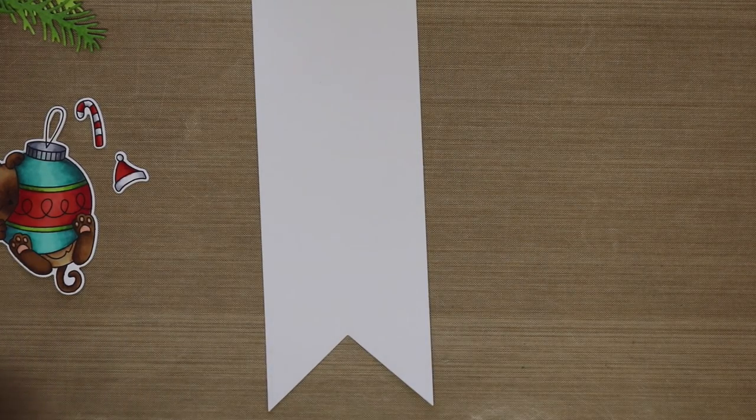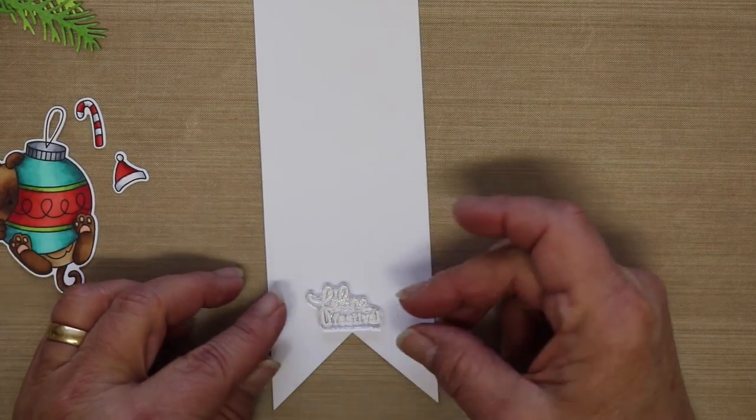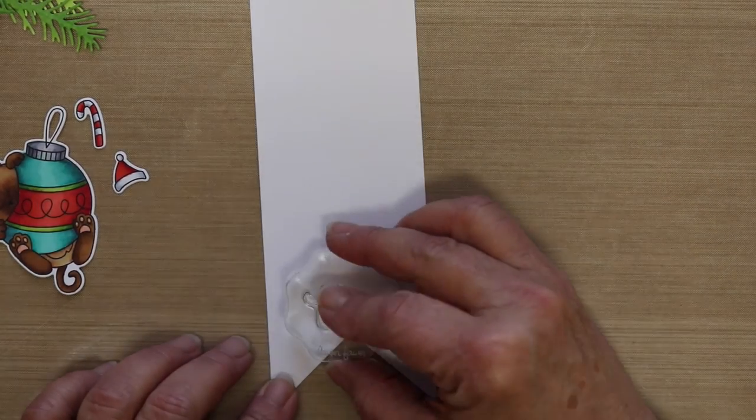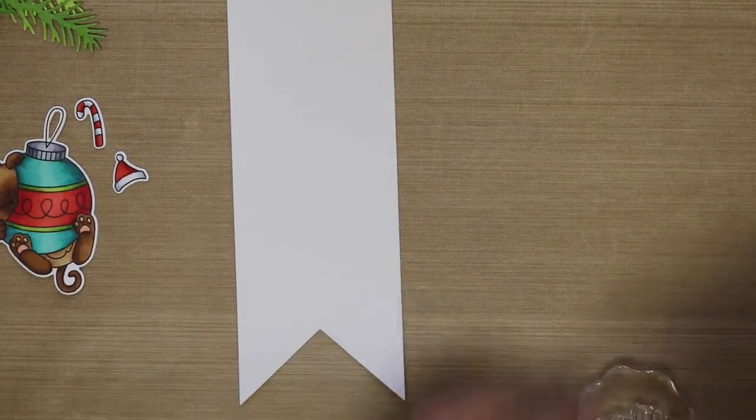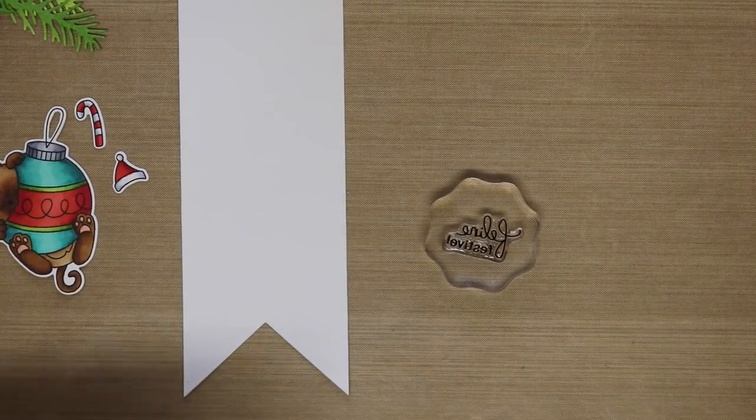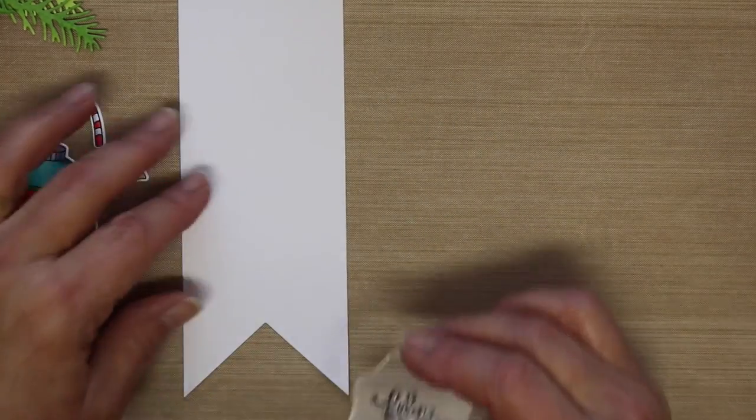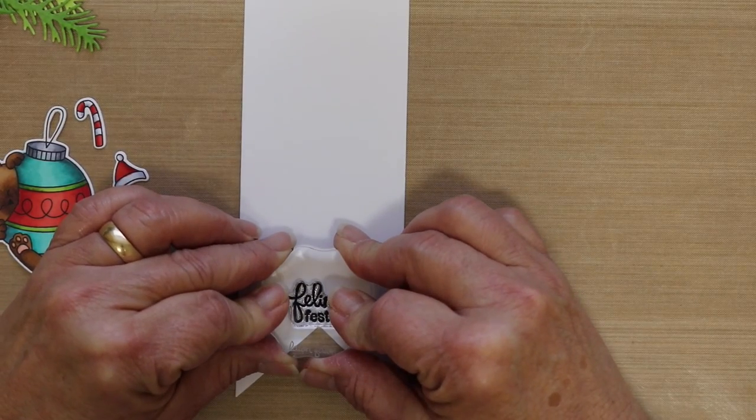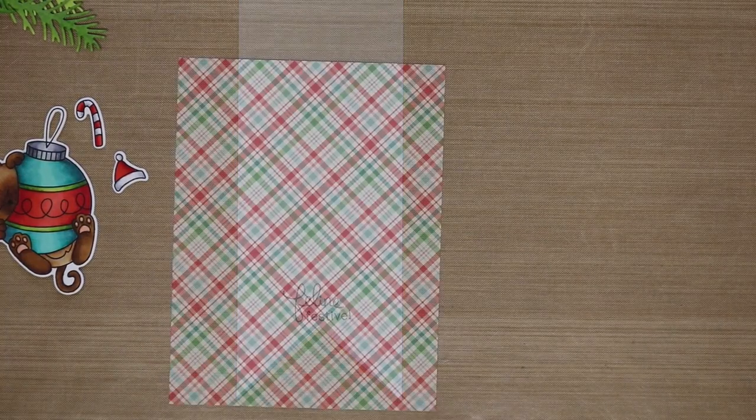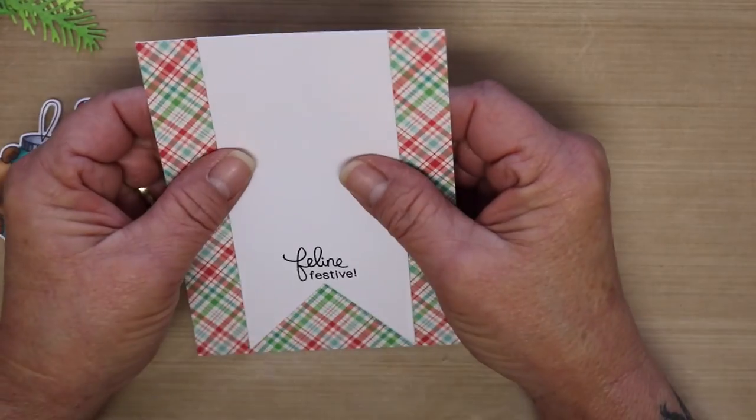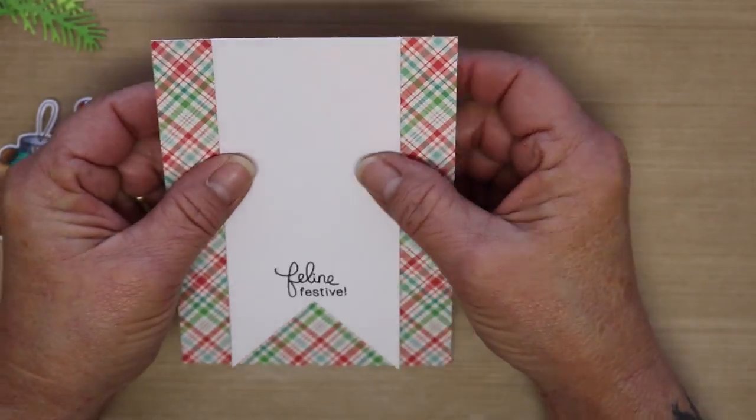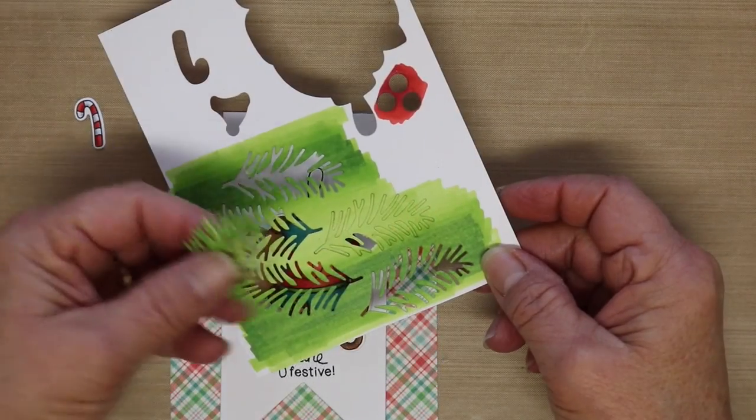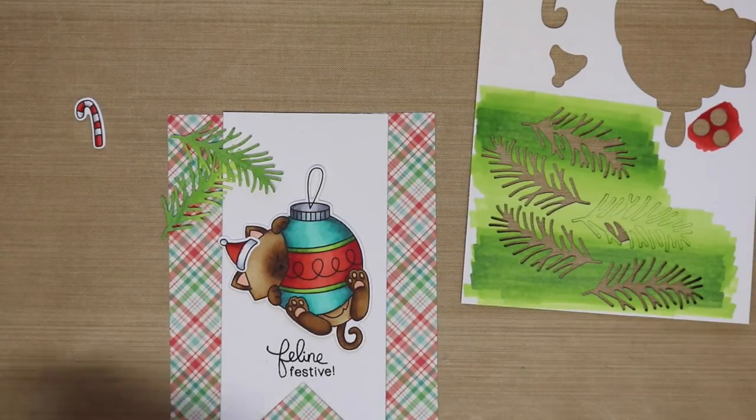So here I have cut out a banner using the Simon Says Stamp Basic Banner Dies. And I am going to stamp the Sentiment Feline Festive with some VersaFine Onyx Black Ink. And I'm also using some patterned paper from Lawn Fawn, which is the Perfectly Plaid Christmas. And this is actually where I got my color scheme for the Copic Markers.